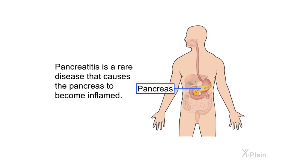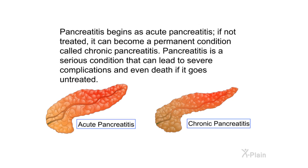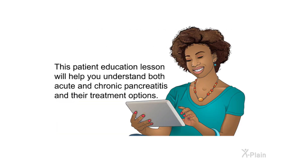Pancreatitis is a rare disease that causes the pancreas to become inflamed. Pancreatitis begins as acute pancreatitis; if not treated, it can become a permanent condition called chronic pancreatitis. Pancreatitis is a serious condition that can lead to severe complications and even death if it goes untreated. This patient education lesson will help you understand both acute and chronic pancreatitis and their treatment options.